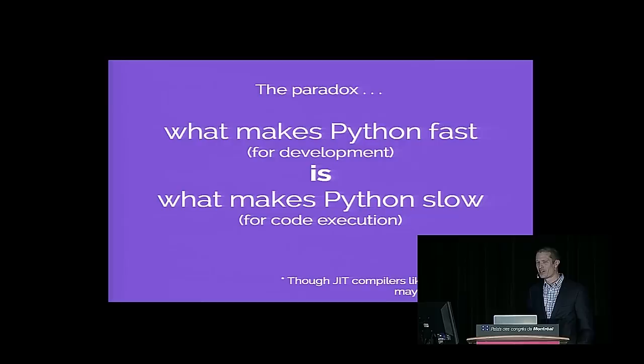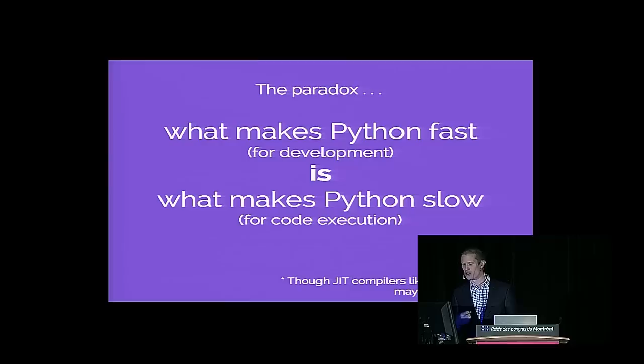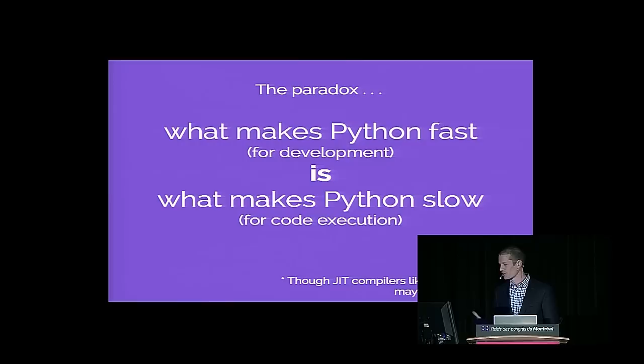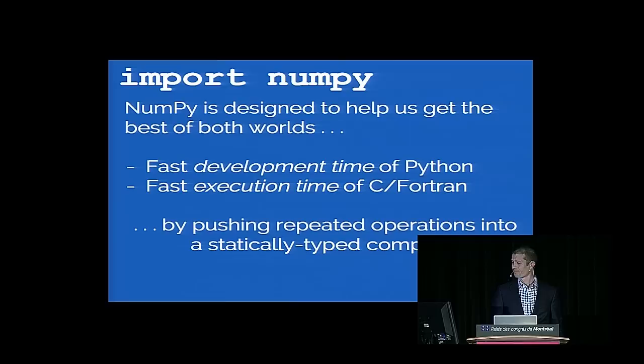This is the paradox we have to work with when doing scientific or numerically intensive Python. What makes Python fast for development — its high-level, interpreted, dynamically-typed nature — is exactly what makes it slow for code execution. There are some approaches becoming more mature, like PyPy, Numba, and other just-in-time compilations that might fix this in the future, but for the time being, standard Python is what most scientists are using.